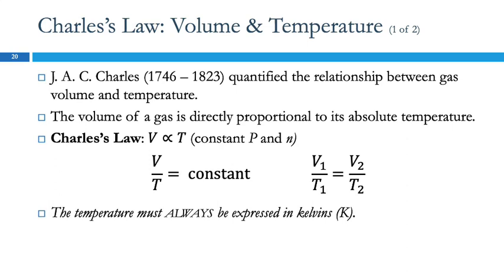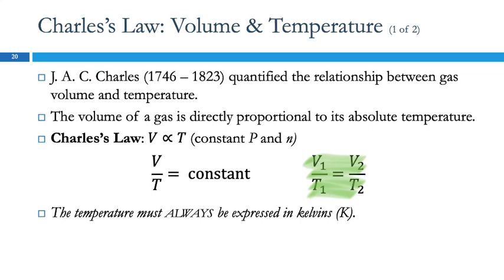Charles's Law: the scientist J.A.C. Charles, who lived in the 1700s and 1800s, looked at the relationship between the volume of a gas and its temperature. He found that volume is directly proportional to its absolute temperature. With Charles's Law, volume is proportional to temperature, which means V divided by T equals a constant, giving us V1 over T1 equals V2 over T2.